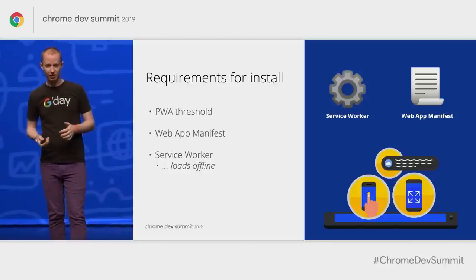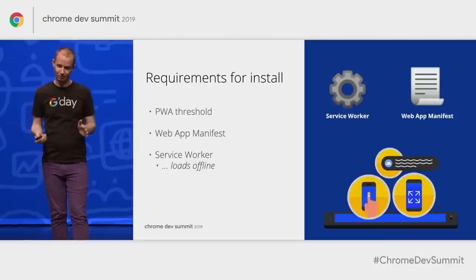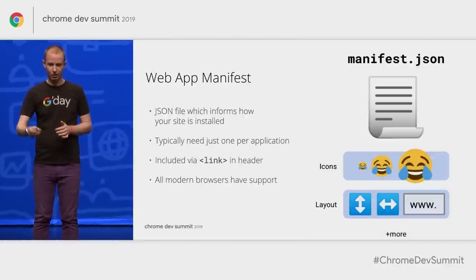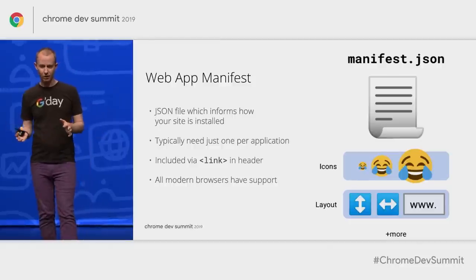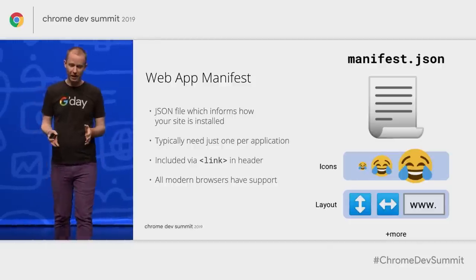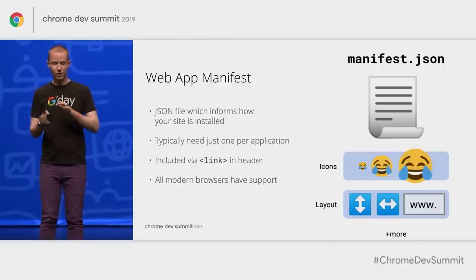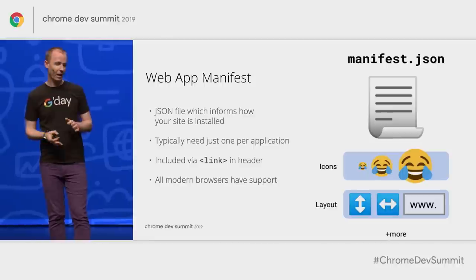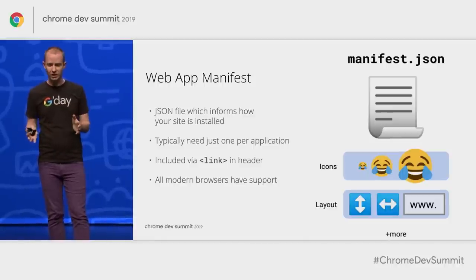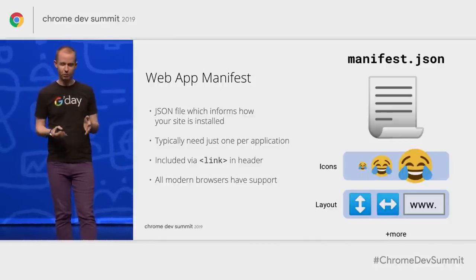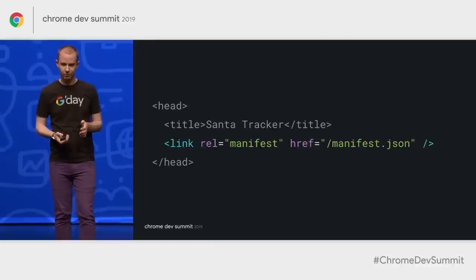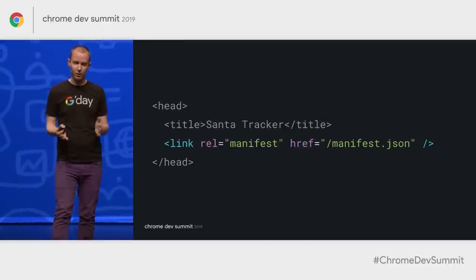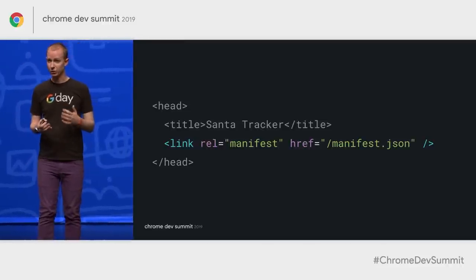There's great content on Codelabs for Google and service workers online. The manifest is a simple JSON file which informs your user how the site acts when it's installed. You need one per app, and you need to include a link to it from every page of your site so the user can tap Install anywhere. Pretty much all modern browsers have some level of support for this file.